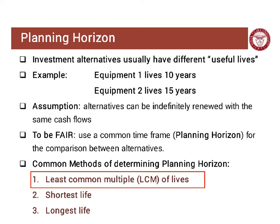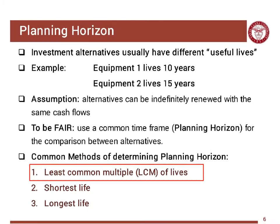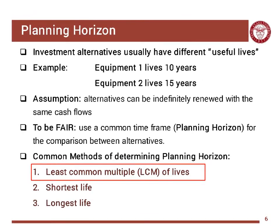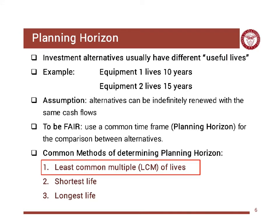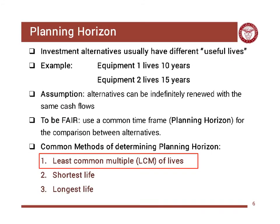There are different ways to handle this. The first method is using the least common multiple of lives, which we will use. The second is the shortest life, and the third is the longest life. From their names you can get a sense of what they mean, but we'll introduce the least common multiple of lives here.